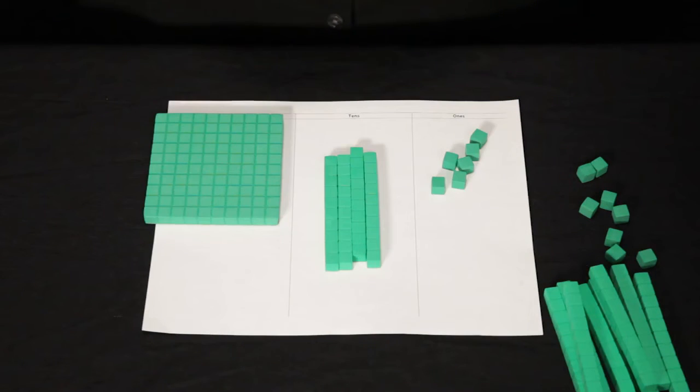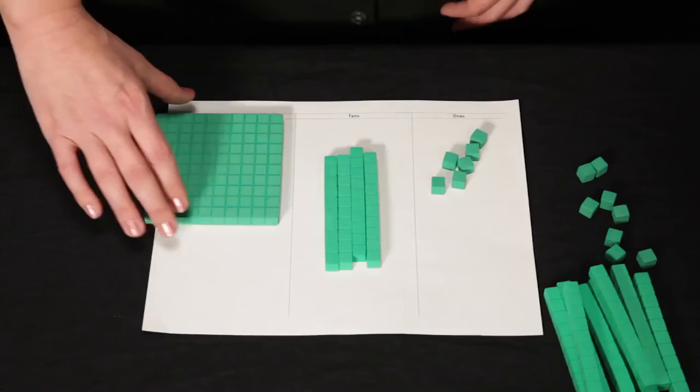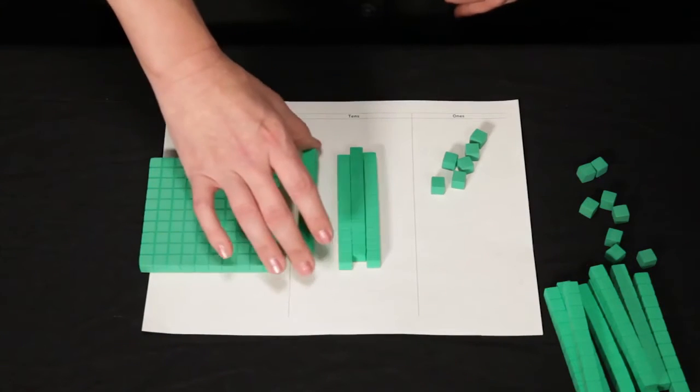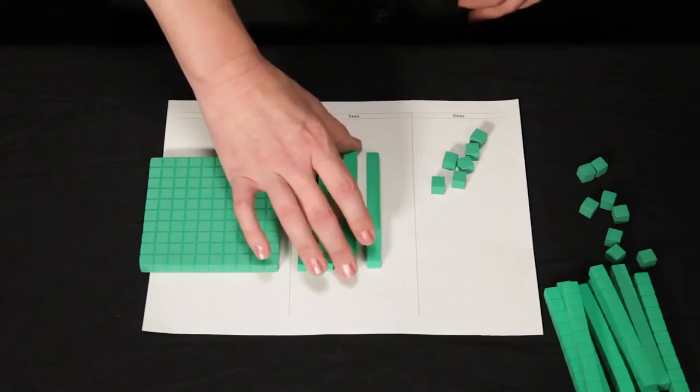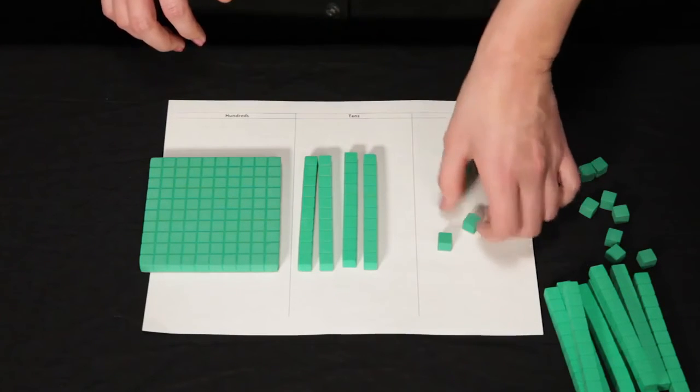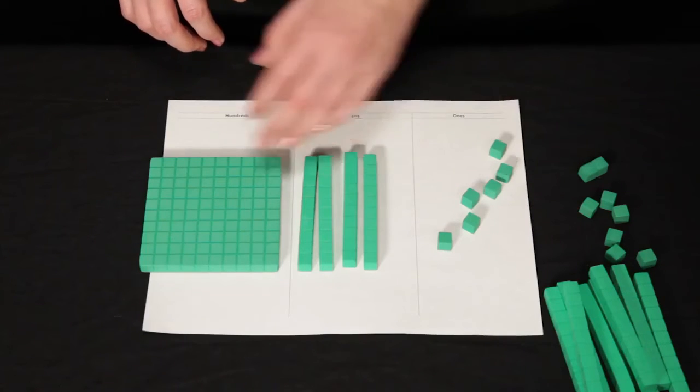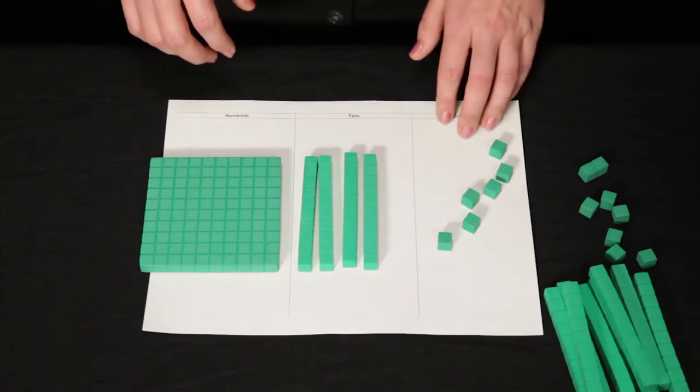88 does not have any hundreds, so I don't have to take away anything from the hundreds column. So when I have 234 and I take away 88, my answer is 100, 110, 120, 130, 140, 141, 142, 143, 144, 145, 146.